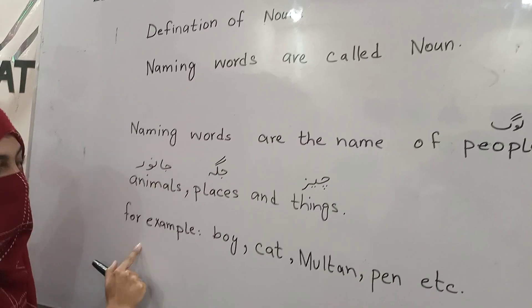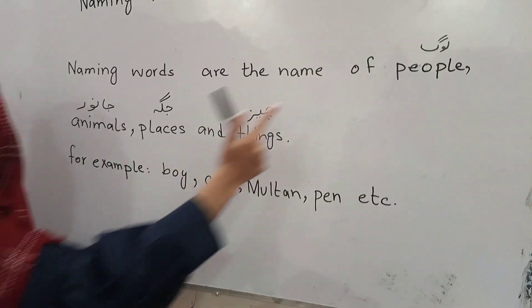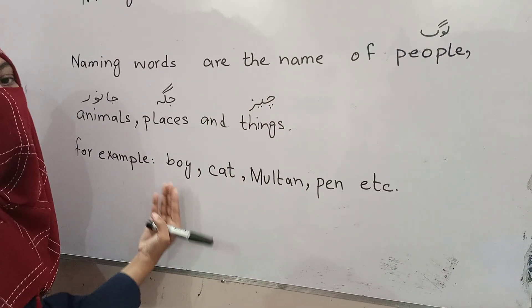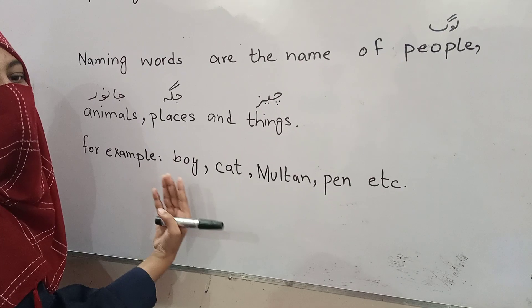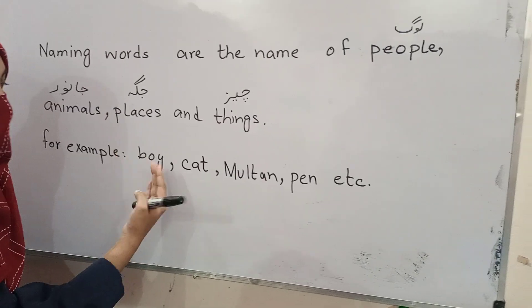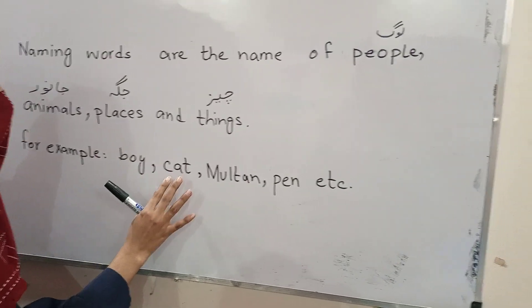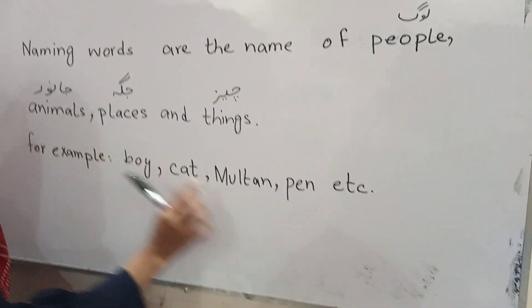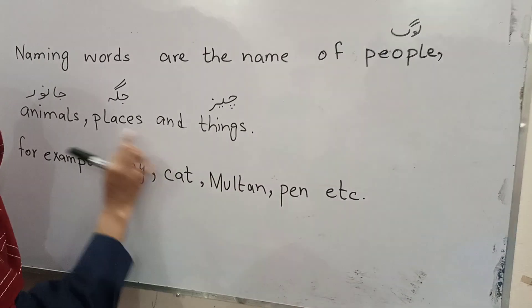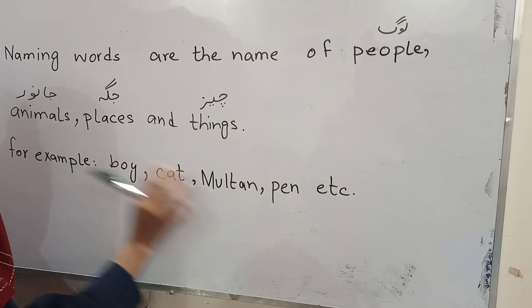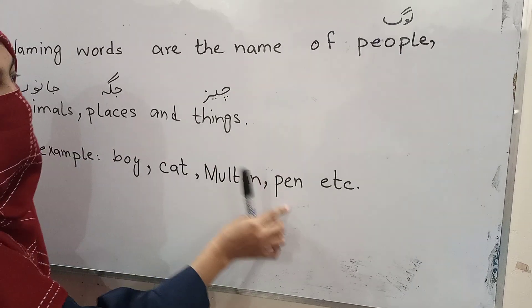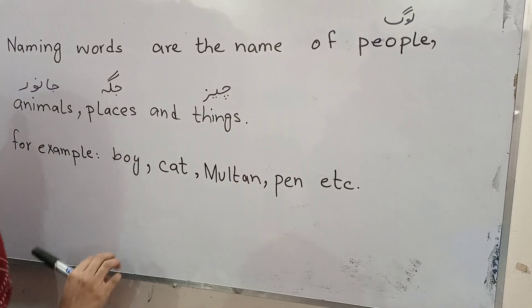For example: boy — for people; cat — for animal; Multan — for places; and pen — for things.